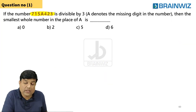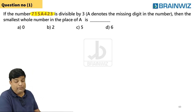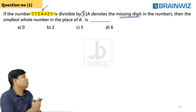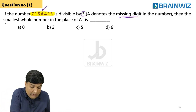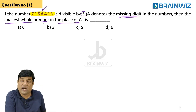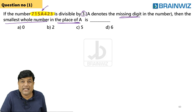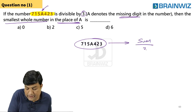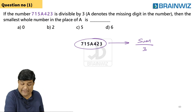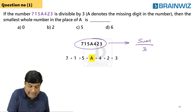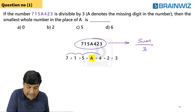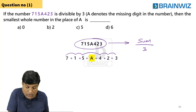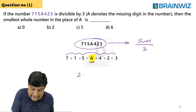In this question, the number is 715A423 and this number is divisible by 3. We need to find the missing digit A — specifically the smallest possible value. Since the number is divisible by 3, the sum of the digits must be divisible by 3. Adding: 7+1+5+4+2+3 = 22. So the sum of all digits is 22 plus A.